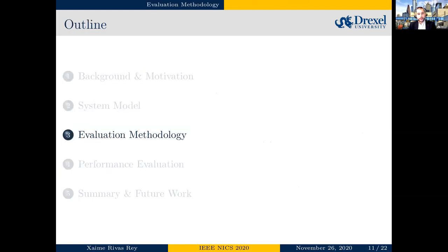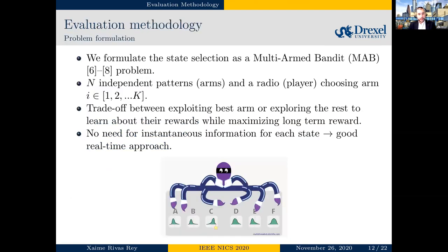To evaluate whether we can successfully select the proper antenna mode, we formulate the antenna state selection problem as a multi-armed bandit problem. Simplified, the theory says we have N different arms to choose from — in this case, the radiation patterns — and a player (the radio) must select among them. The radio must decide whether to choose the arm currently offering the best reward (exploitation) or explore another arm that might not perform as well now but could prove better. This is the fundamental exploration-exploitation trade-off.